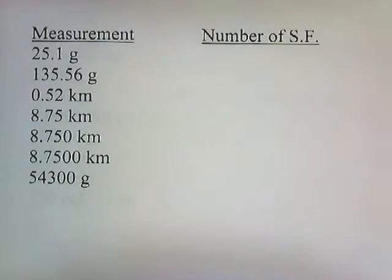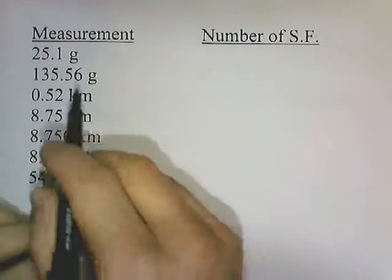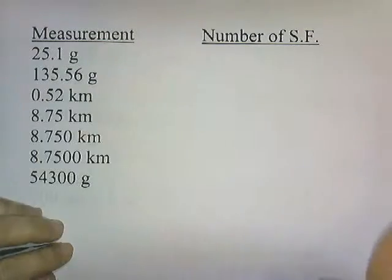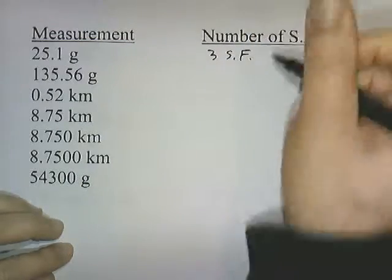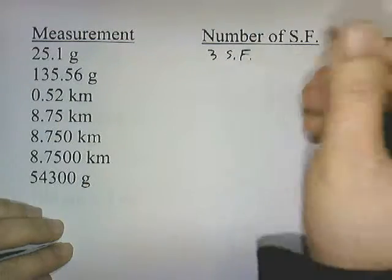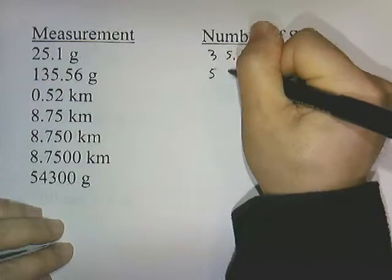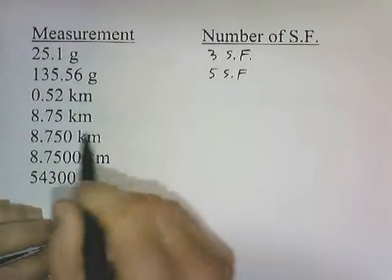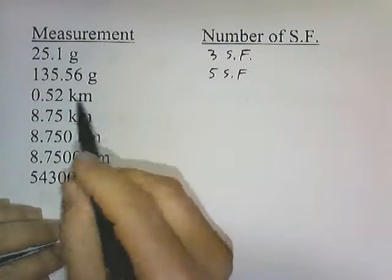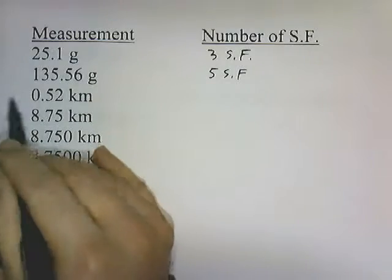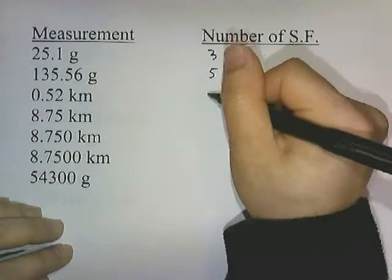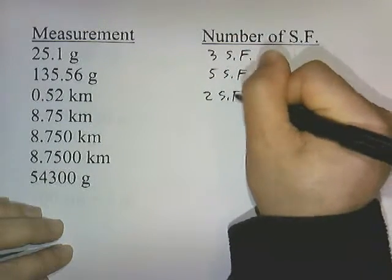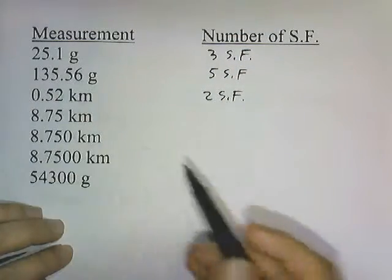Let's do some practice. 25.1 grams — 3 significant figures. 135.56 grams — 5 significant figures. 0.52 kilometers — the zero to the left doesn't count. The zero has to be behind a decimal and behind a number; it's not doing that here, so that's 2 significant figures. The zero is the placeholder there.